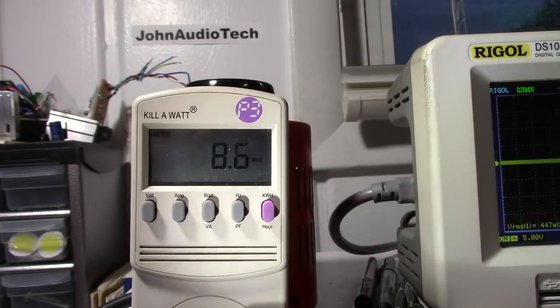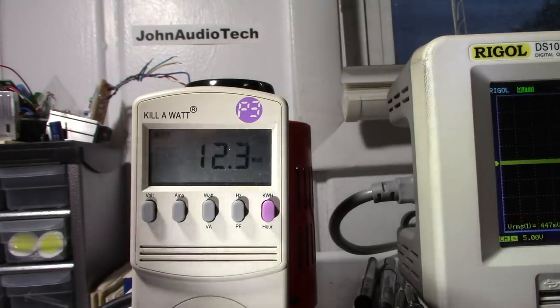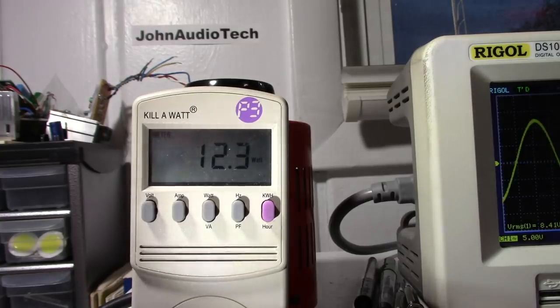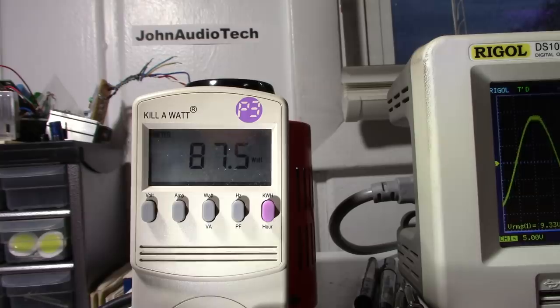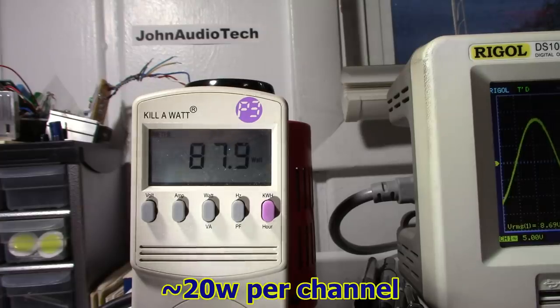This is with the amplifier turned on sitting idle. Now we're up to 12.4, so the amplifier sitting idle doesn't draw that much. Here is the amplifier at full output before clipping. Just to get 40 watts, a little less than 40 watts of clean output, we need almost 90 watts.